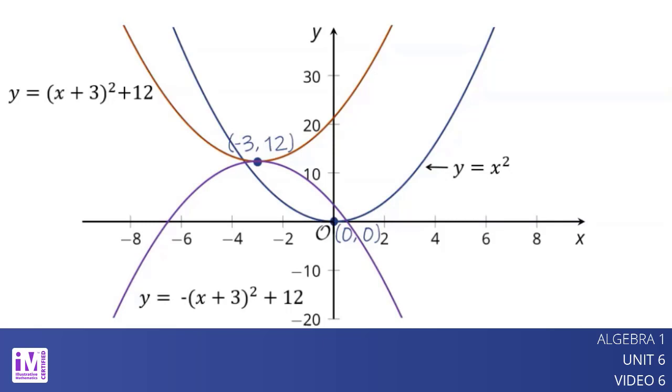But because the squared term is multiplied by a negative number, the graph is flipped over so that it opens downward.